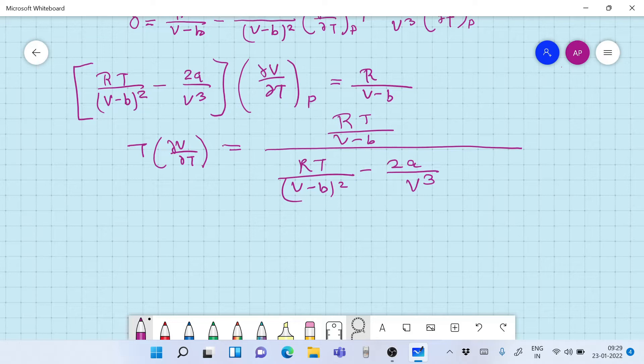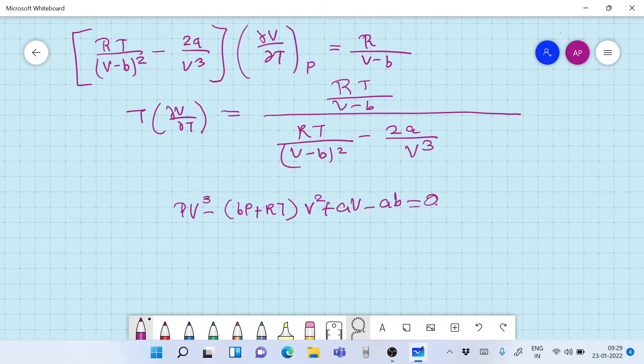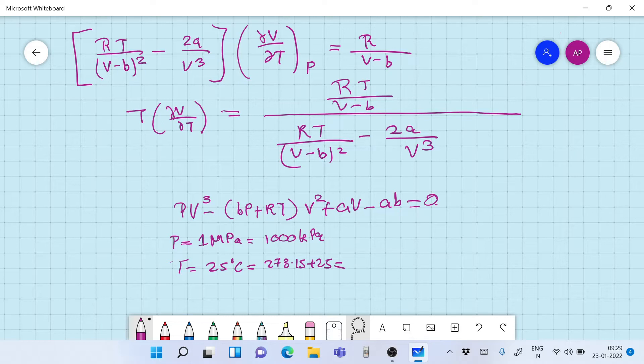So it is better always to take it in the cubic form. So the cubic form of the Van der Waals is V³ minus (BP plus RT)V² plus AV minus AB equals zero. What is the pressure we have now? The pressure is 1 megapascal, which translates to 1000 kilopascals. And the temperature is 25 degrees Celsius, which translates to 273.15 plus 25, that makes it 298.15 kelvin.